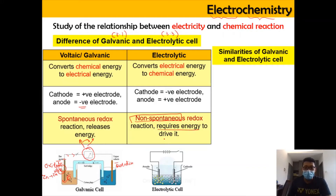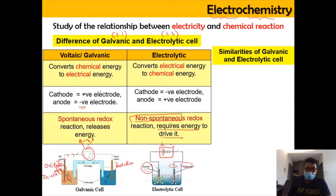In electrolytic cell, the energy needed is in the form of a battery. You need to plug in a battery so that it can convert electrical energy to chemical energy. Because it requires energy from an external source, the electrode polarity depends on the charge of the battery. The anode of the battery makes the connected electrode the anode (positive), and the cathode of the battery makes the connected electrode the cathode (negative).